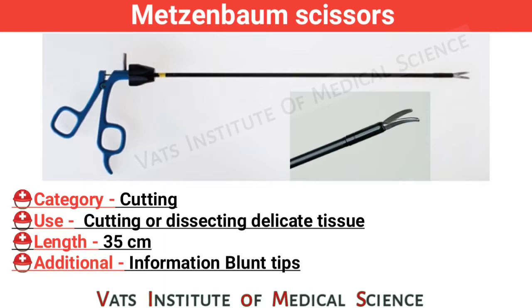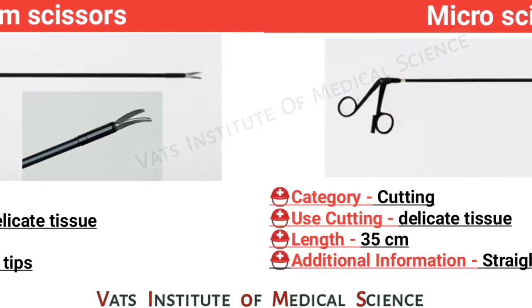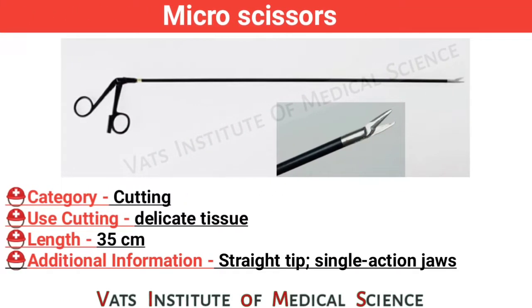Major bum scissor. Category: cutting. Use: cutting or dissecting delicate tissue. Length: 35 cm. Additional information: blunt tips.